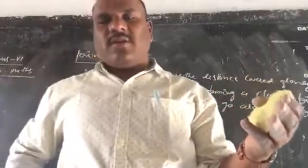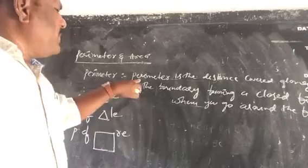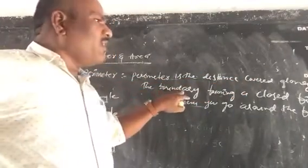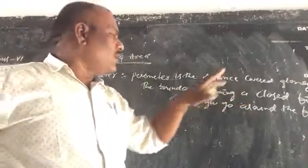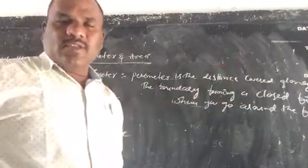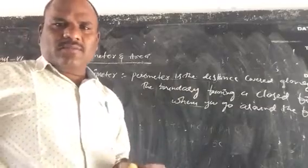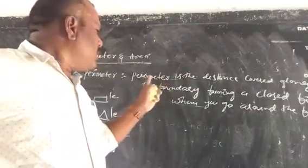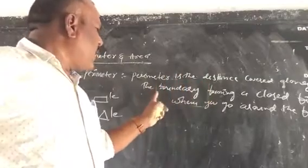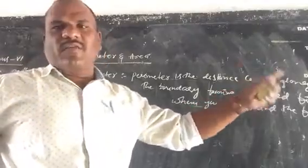So what is perimeter? Perimeter is the distance covered along the boundary forming a closed figure when you go around the figure once. That is called a perimeter.